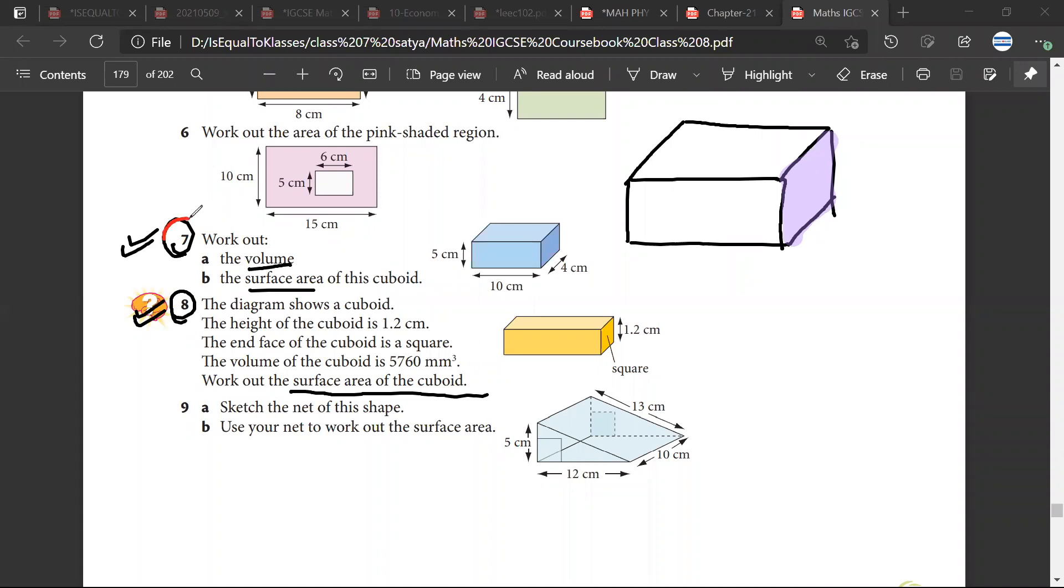Okay Mr. Satya, question 7. How will I find the volume? So we have to multiply 5 by 10 into 4. So the answer would be 200 centimeters cube. And how do I find the surface area?